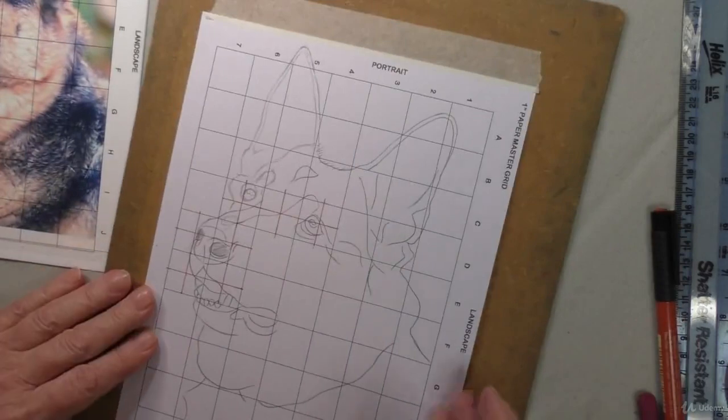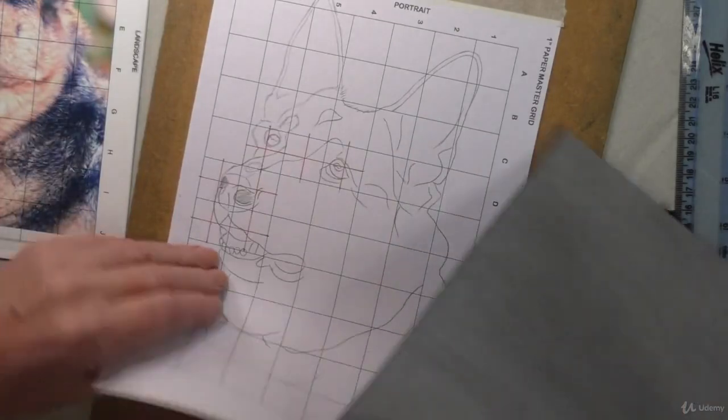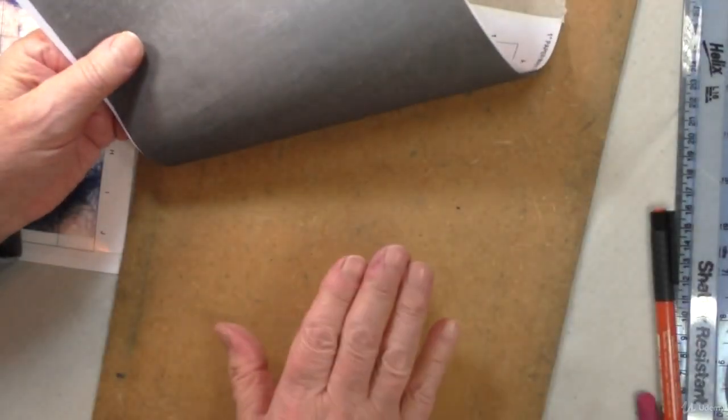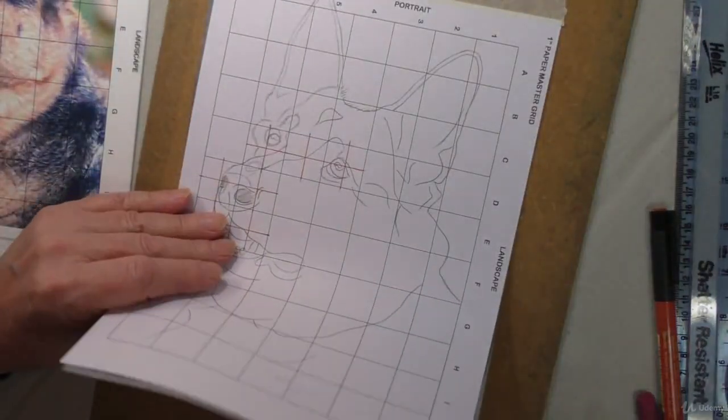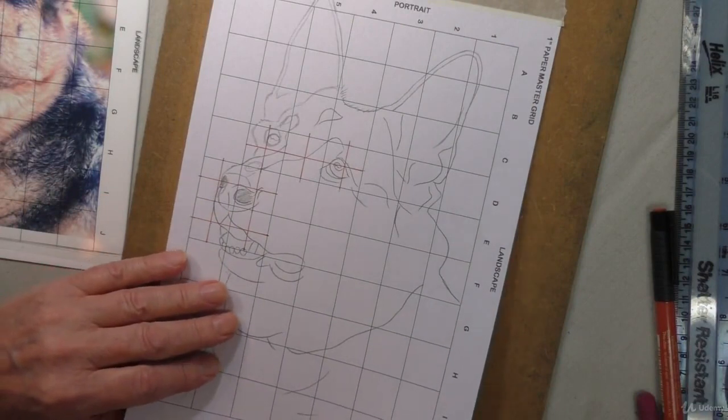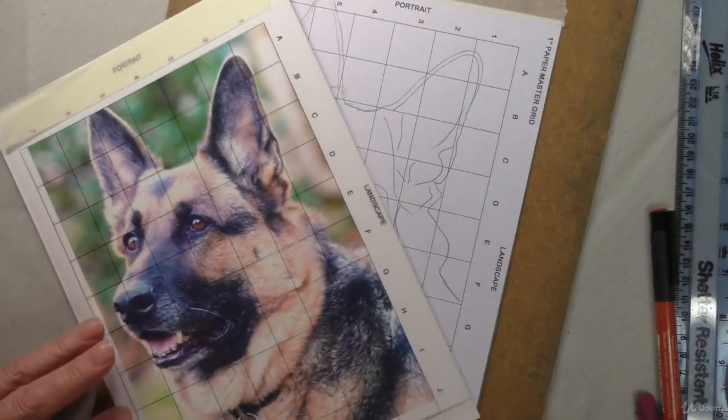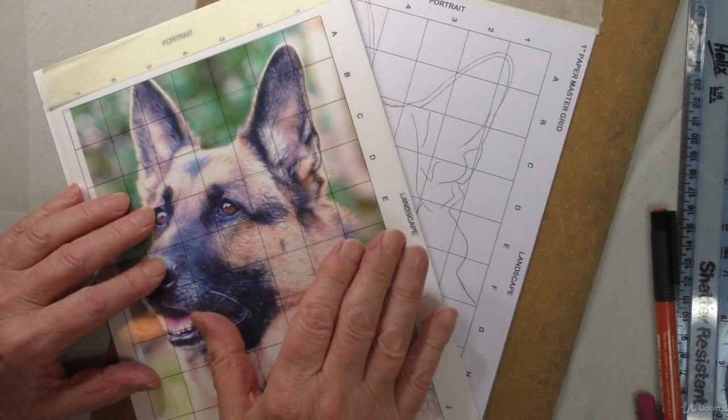That's then transferred to your drawing surface by means of the graphite, which you've seen before. Whatever you're going to draw on, whether it's watercolor paper, gray paper in my case, acrylic, or whatever. So that's the procedure with a German Shepherd. And now something completely different, I'm going to show you how we tackle a landscape.